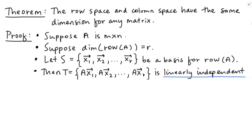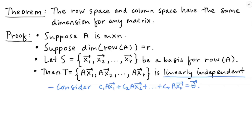The set T — that is, AX1, AX2, all the way up through AXR — is going to be a linearly independent set. But that claim itself requires some justification, so I'm going to write that in light blue. Now if we want to consider whether or not a set is linearly independent, we consider the different ways that we can linearly combine its elements to get the zero vector. So consider some combination giving me the zero vector, and I'm hoping to show that C1, C2, all the way up through CR must all equal zero.